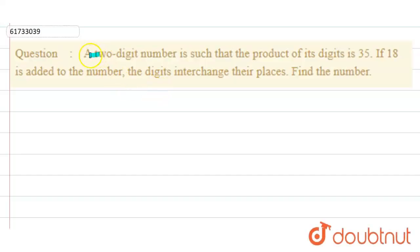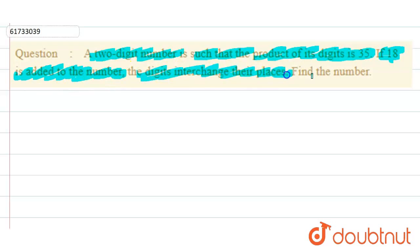In this question, we have said that a two-digit number is such that the product of its digits is 35, and if 18 is added to the number, the digits interchange their places, then we have to find the number.